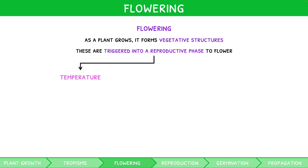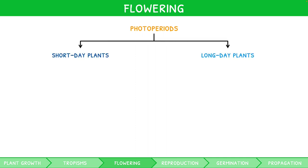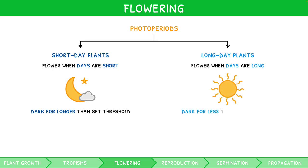Both temperature and the length of darkness in a 24-hour period, known as photoperiods, impact this trigger. For your IB Biology higher level exam, you will need to focus on photoperiods. There are two types of plants with regards to photoperiods and flowering: short and long day plants. Short day plants flower when days are short, i.e. when the quantity of darkness in a 24-hour period becomes longer than a set threshold. Long day plants flower when days are long, i.e. when the quantity of darkness in a 24-hour period becomes shorter than a set threshold.